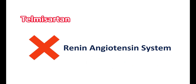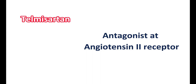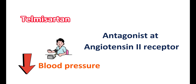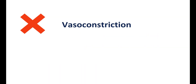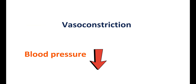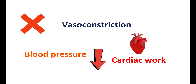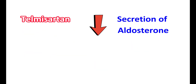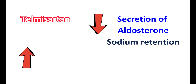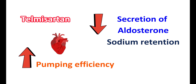Telmisartan works by inhibiting the renin-angiotensin system. Its main action is on the potent vasoconstrictor angiotensin-2 — it acts as an antagonist at angiotensin-2 receptors, blocking its actions. This reduces vasoconstriction and lowers blood pressure, thereby reducing cardiac workload and increasing cardiac efficiency. Telmisartan can also reduce the secretion of aldosterone, the hormone responsible for reabsorption of sodium, thereby reducing sodium retention and body volume. This improves the pumping efficiency of the heart and relieves symptoms of heart failure.